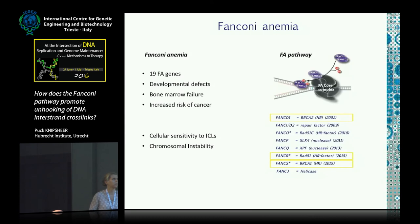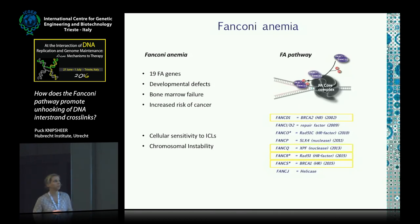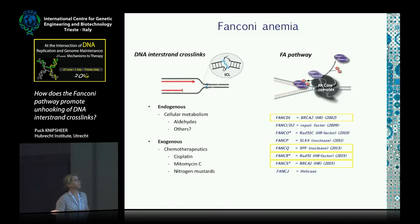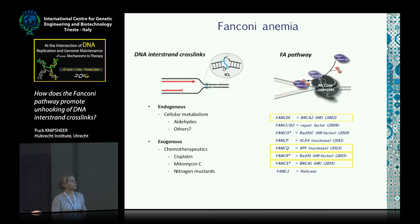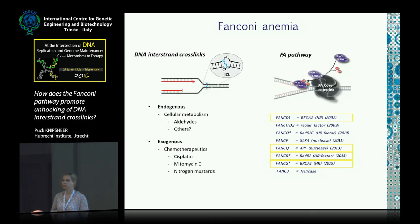It's been emerging in recent years that several of these Fanconi factors may actually have a very ICL repair-specific function, and we hope to convince you that that's also the case for XPF. DNA interstrand crosslinks are mainly repaired during the replication of DNA. They can form endogenously by metabolic byproducts such as aldehydes and possibly other metabolites, but they can also be induced exogenously by agents used in chemotherapy such as cisplatin and mitomycin C. We are trying to understand how the Fanconi anemia factors repair such DNA interstrand crosslinks.